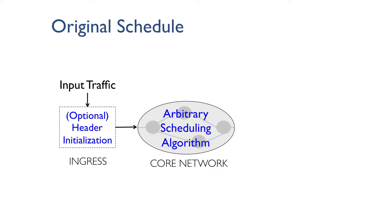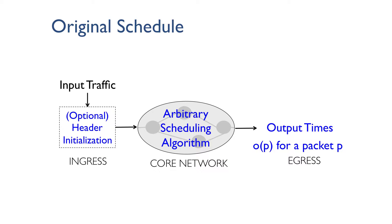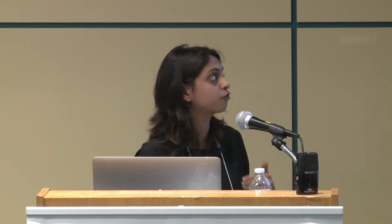For the theoretical viewpoint, consider a network with some topology and input load given as packet arrival times at the ingress. We have an arbitrary set of scheduling algorithms running in the core routers, many relying on header initialization done at the ingress. The resulting output times at the egress for a packet P — denoted OP — form what we call a schedule. We allow a very broad view of scheduling algorithms when creating this original schedule: different routers can run different algorithms and may rely on arbitrary state or even consult an oracle. The only requirement is that the final output times must be viable.